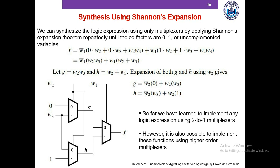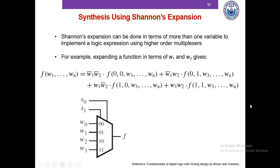So far we have learned to implement any logic expression using 2-to-1 multiplexers. It is also possible to implement these functions using higher-order multiplexers, such as 4-to-1 or 8-to-1. Shannon's expansion can be done in terms of more than one variable. For instance, expanding a function in terms of W1 and W2 gives us 4 cofactors corresponding to the 4 possible combinations of the selector pins: W1_bar·W2_bar, W1_bar·W2, W1·W2_bar, and W1·W2.